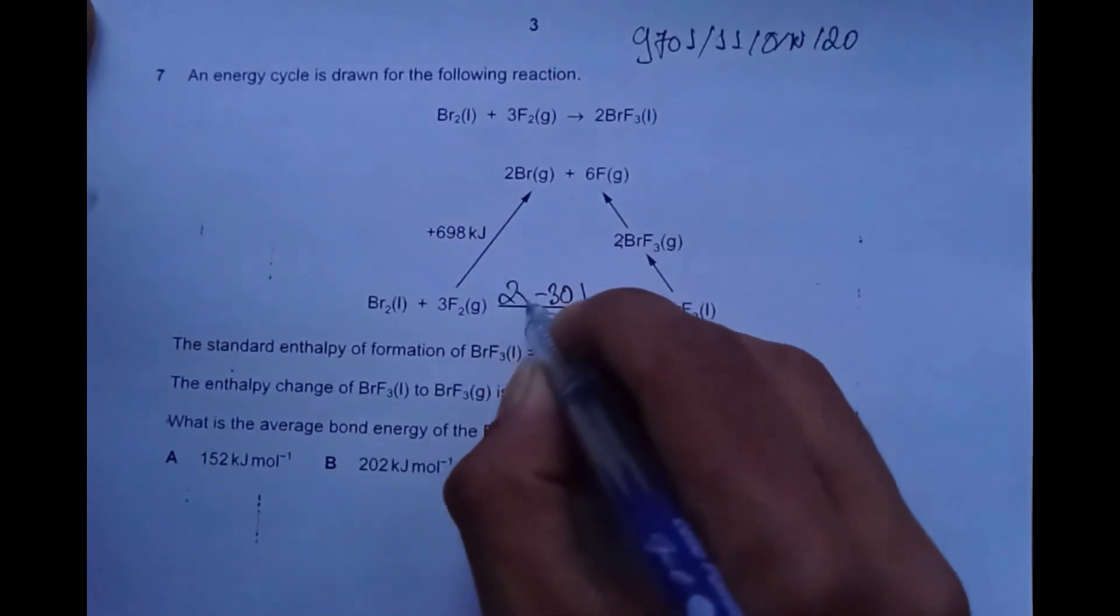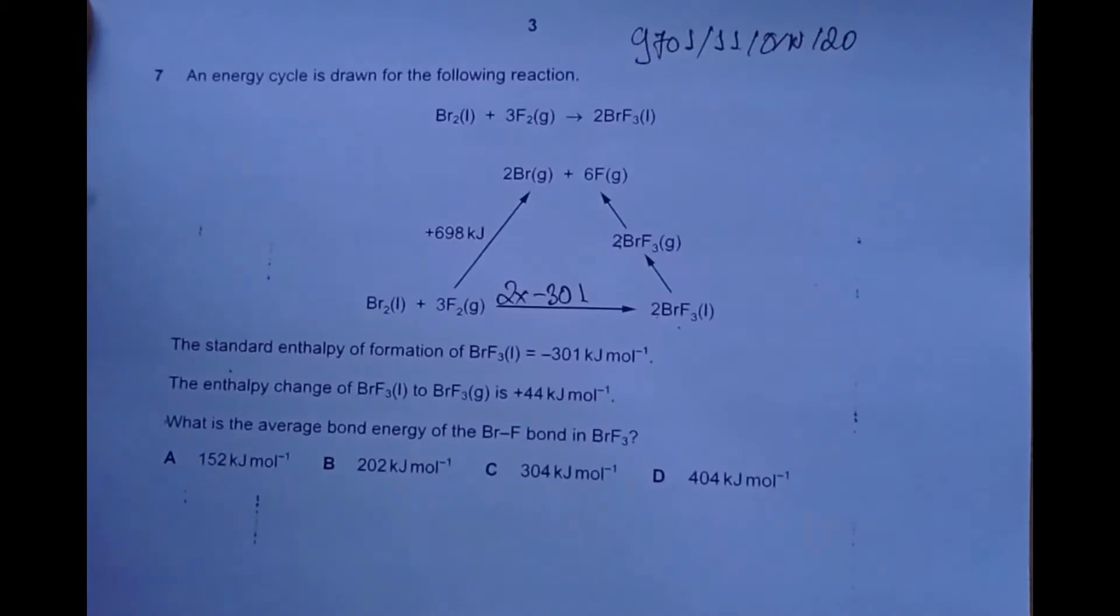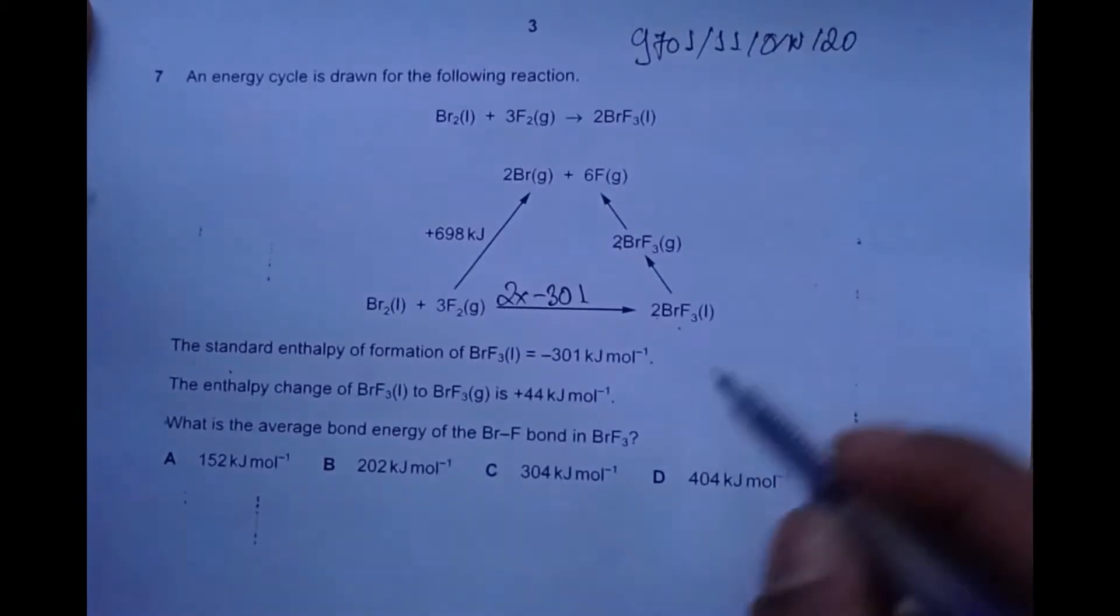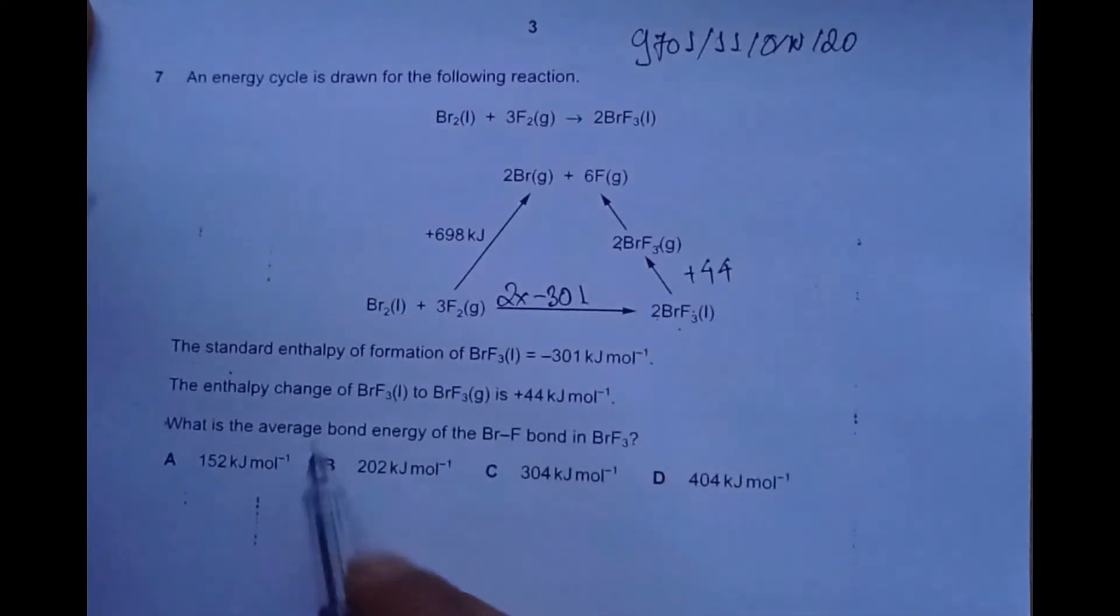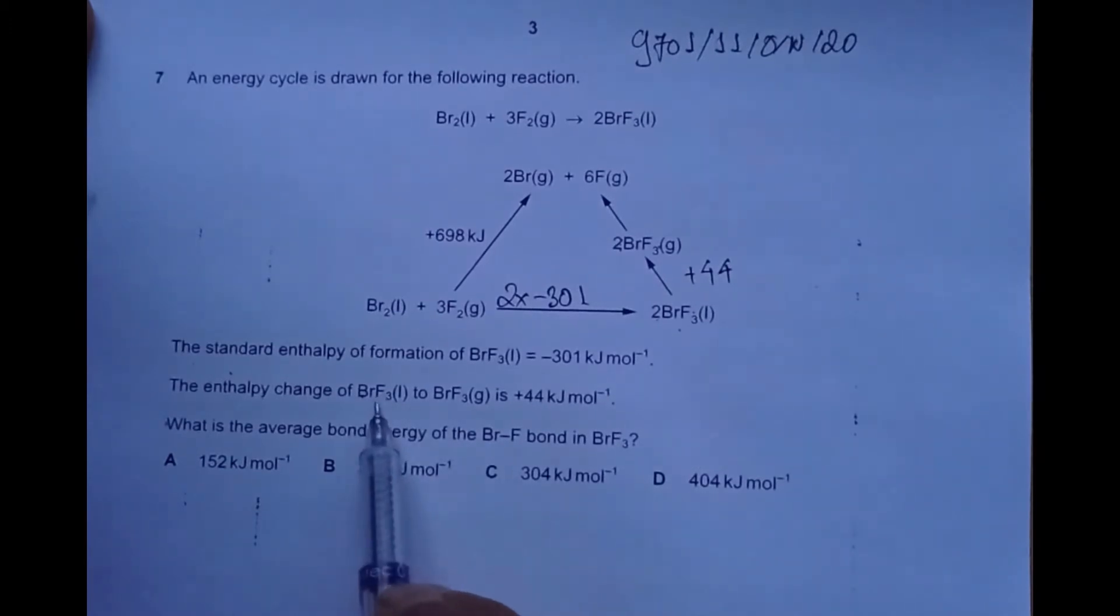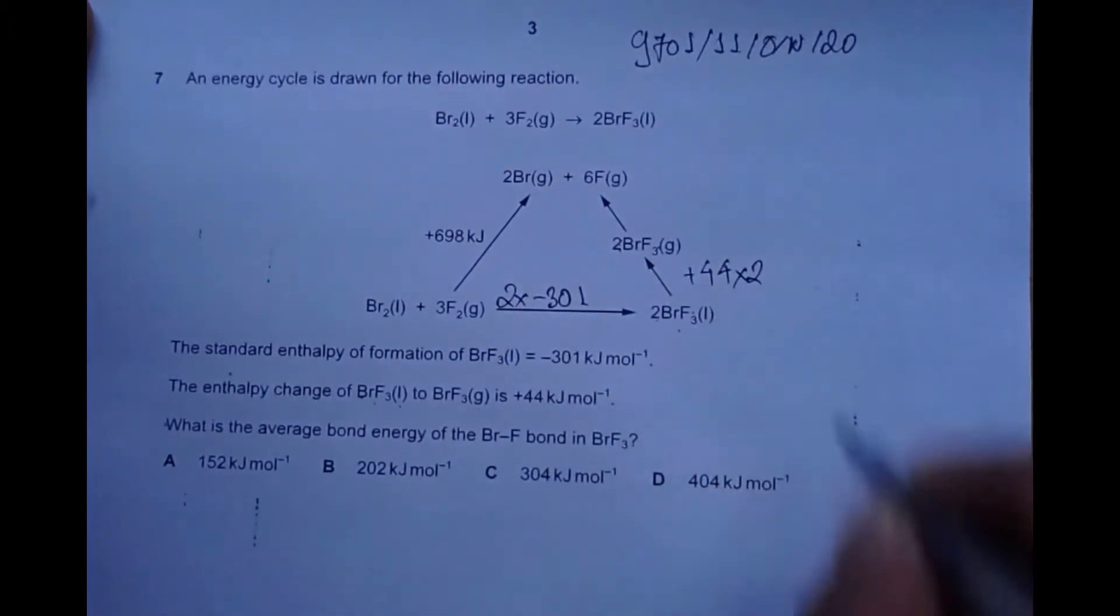The enthalpy change of BrF3 liquid to gas is +44 kJ/mol. Conversion from liquid to gas is enthalpy of vaporization. Similarly, conversion from solid to gas would be enthalpy of atomization. This value is for one mole of bromine trifluoride liquid to gas. Since we have two moles, we multiply by two as well, making this 88.